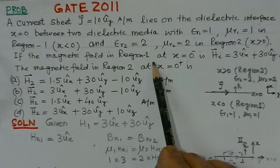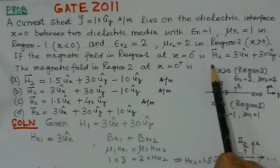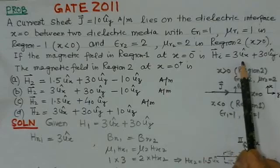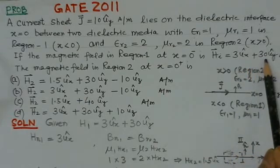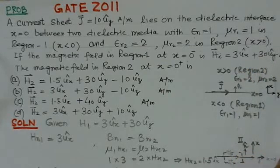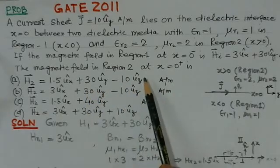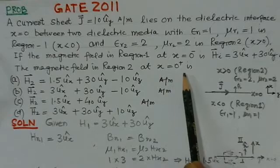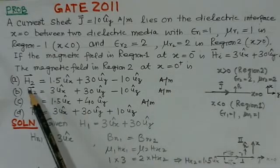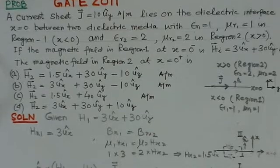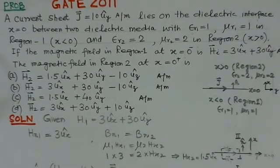If the magnetic field in region 1 at x = 0 is H = 3u_x + 30u_y amperes per meter, then the magnetic field in region 2 for x = 0+ is... there are four options given here and we have to see which is the right option.